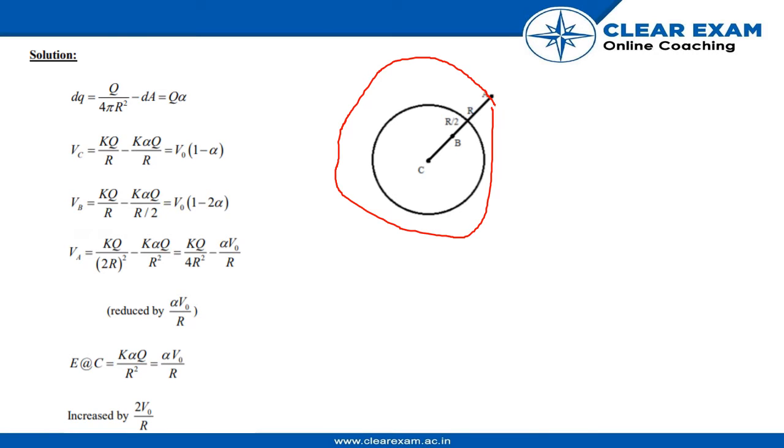As we know that dQ equals Q by 4πR² times dA, where 4πR² is the area of the sphere.